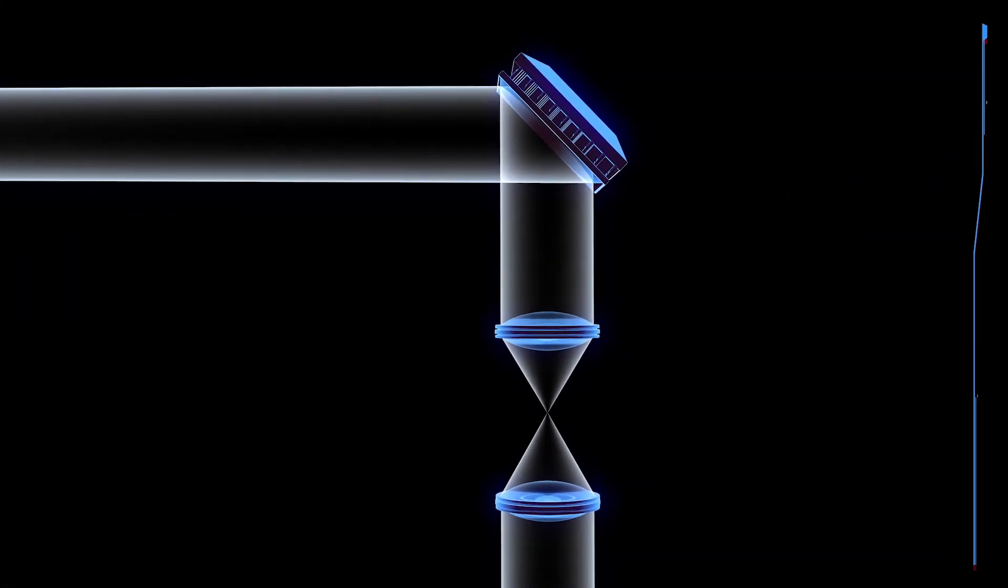A coronagraph is a way to see distant planets hidden by the glare of the star they orbit. The coronagraph reduces the light coming directly from the star to separate it from the light reflected by the planet.